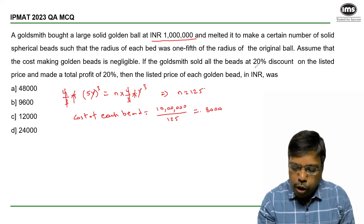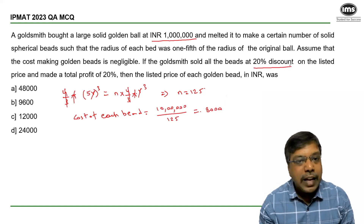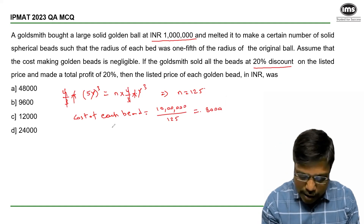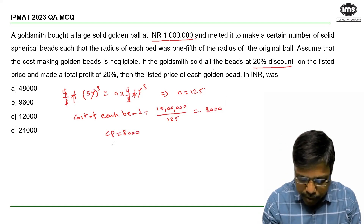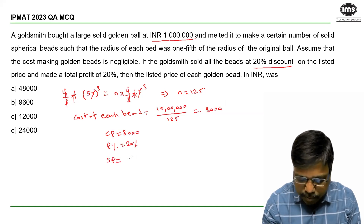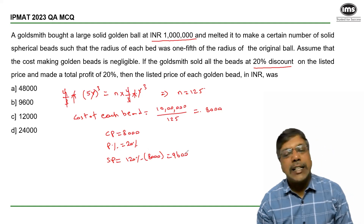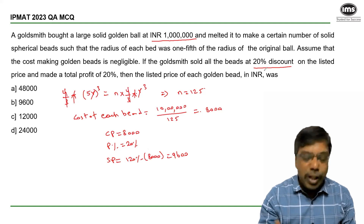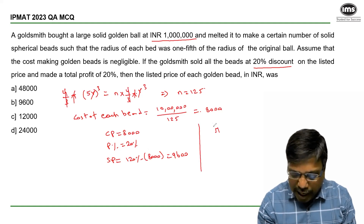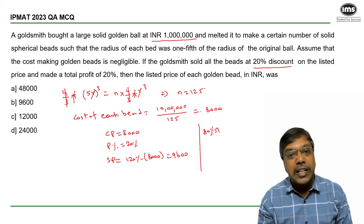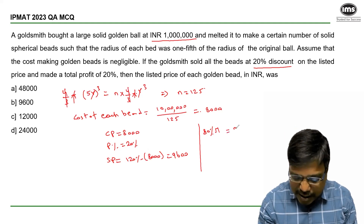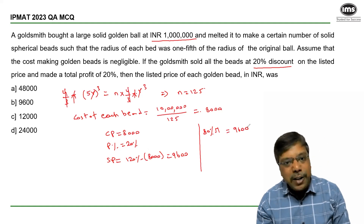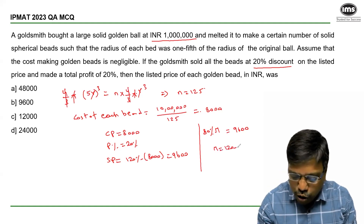The goldsmith sold all the beads at a 20% discount and made a profit of 20%. When the cost price is 8000 and the profit is 20%, the selling price is 120% of the cost price, which is 9600. But this selling price was attained after giving a 20% discount on the market price. So if the market price is m, then 80% of m equals 9600, hence the market price is equal to 12000.